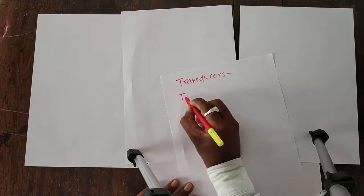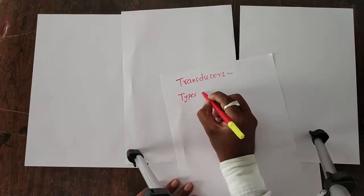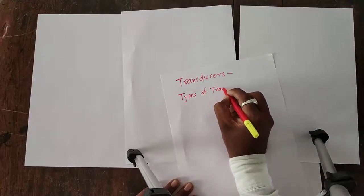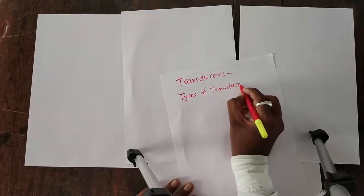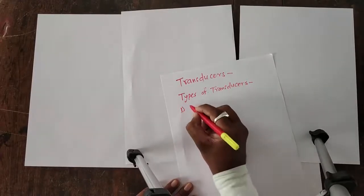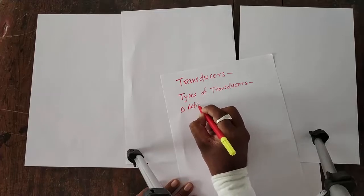Transducers is an electronic device which converts one form of energy into another form of energy. These transducers are of two types. First is active type and second is passive type.